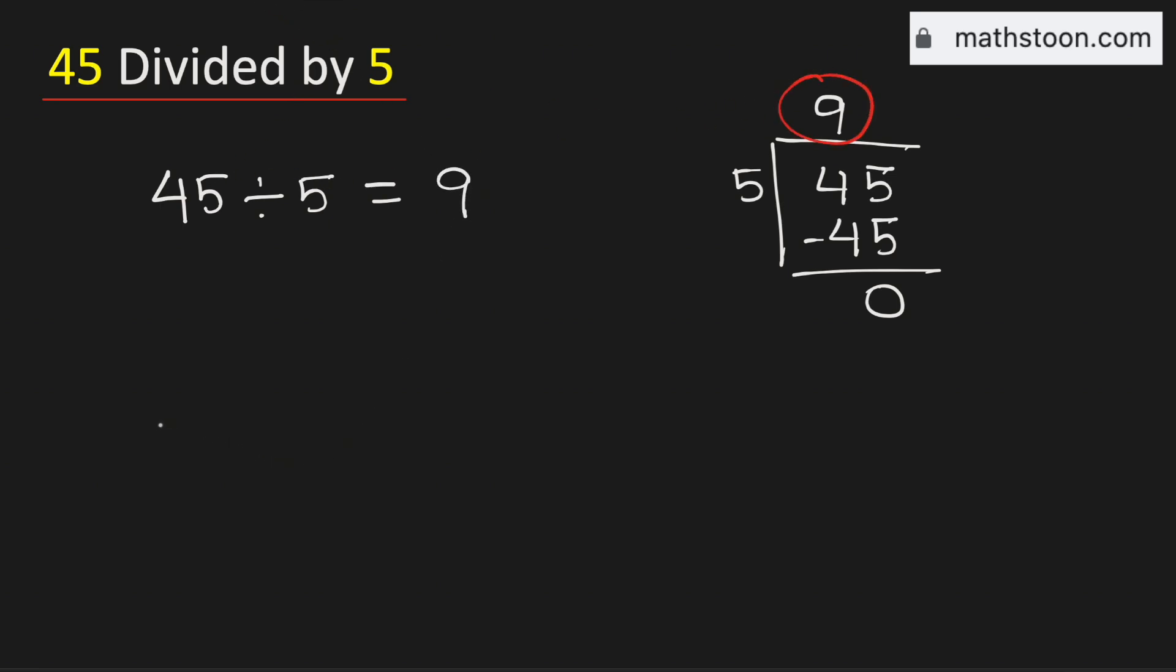Now we will do this using some other method. 45 divided by 5 can be written as 45 over 5.